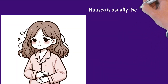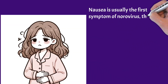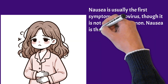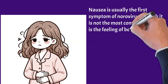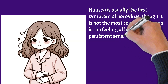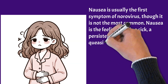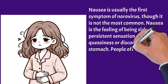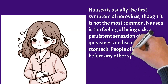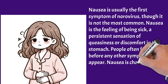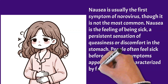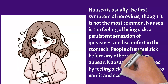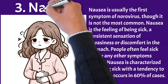Nausea is usually the first symptom of norovirus, though it is not the most common. Nausea is the feeling of being sick — a persistent sensation of queasiness or discomfort in the stomach. People often feel sick before any other symptoms appear. Nausea is characterized by a tendency to vomit and occurs in 60% of cases.